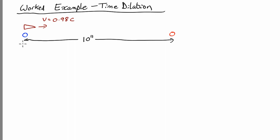And there are two events. Event 1, which is when the spacecraft leaves the Earth, and Event 2, when it reaches Mars. So let's look at what's going on in the two frames of reference.